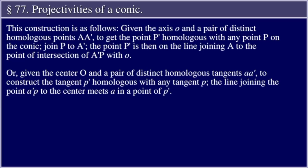The construction is as follows. Given the axis O and a pair of distinct homologous points a, a', to get the point p' homologous with any point p on the conic, join p to a'. The point p' is then on the line joining a to the point of intersection of a'p with O. Or, given the center O and a pair of distinct homologous tangents a, a', to construct the tangent p' homologous with any tangent p, the line joining the point a'p to the center meets a in a point of p'.